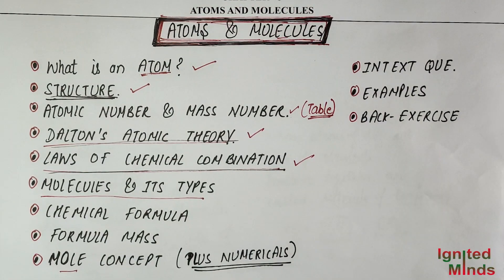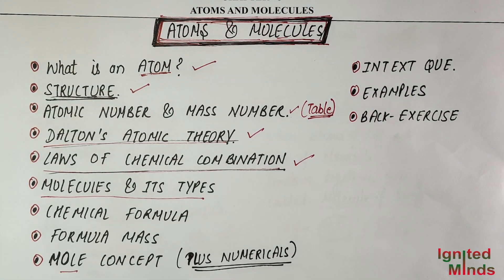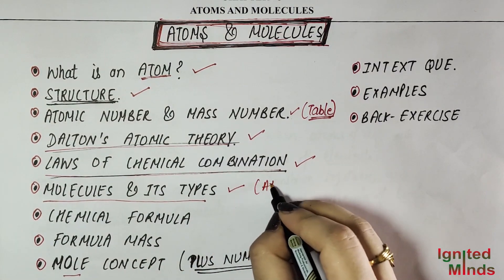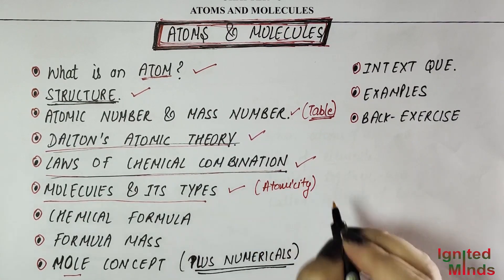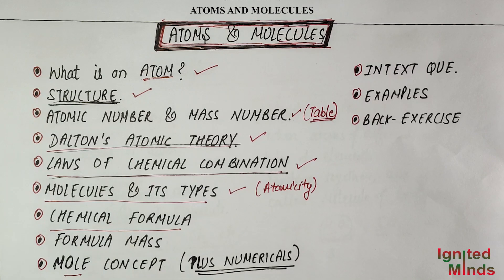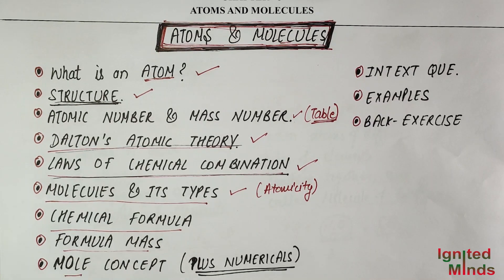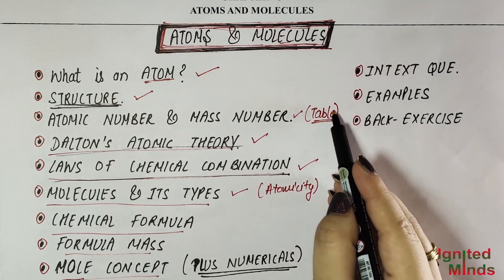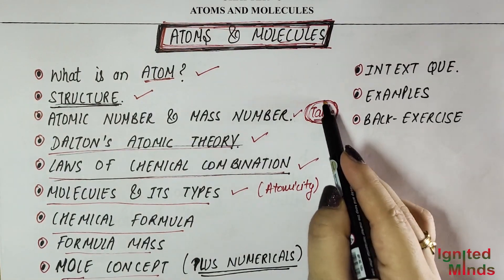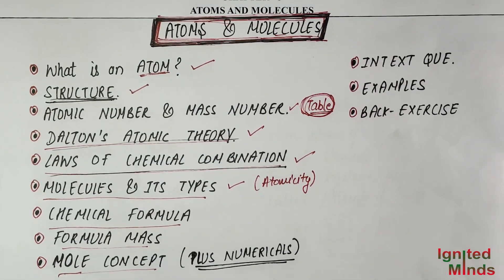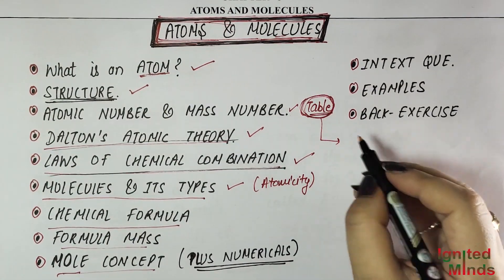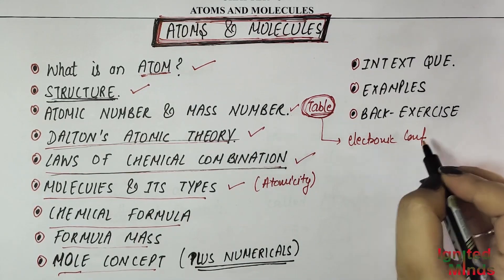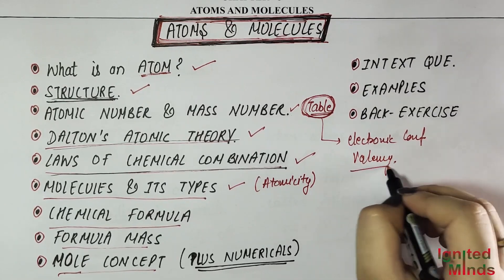So in this video we have covered the Laws of Chemical Combination, Dalton's Atomic Theory, molecules and their types, and atomicity. Next we will cover chemical formula, formula mass, and the mole concept. For that, I suggest you review the table we made in the first video — the atomic masses table with electronic configuration and valency. That's all for this video.